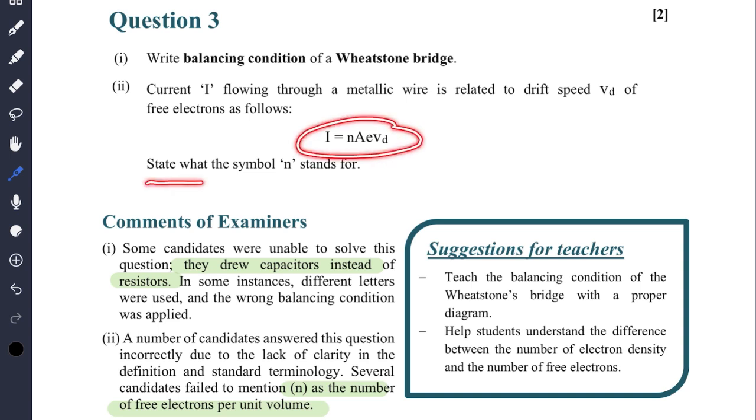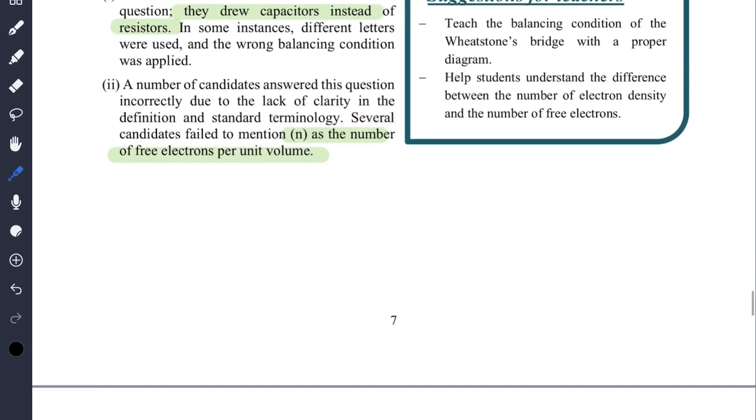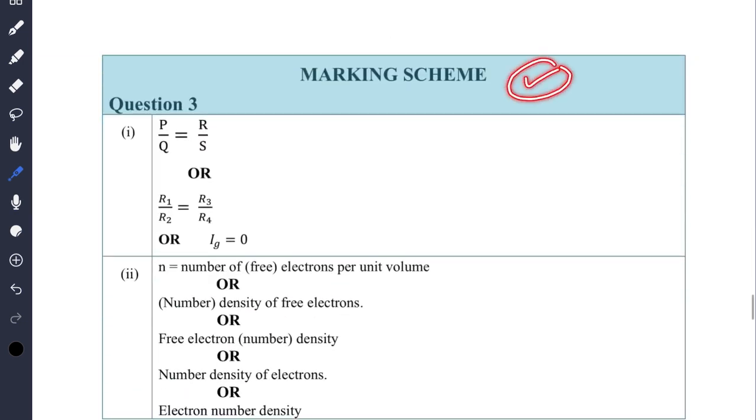The second was: state what the symbol n stands for. This stands for number of free electrons per unit volume. Several candidates failed to mention this also. If you look at the marking scheme there is this OR - like if you write P by Q equals R by S then also you will be awarded marks, either you write this or IG equals zero.